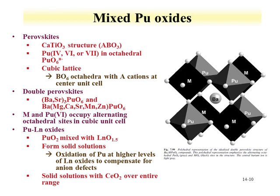Mixed plutonium oxides can also be formed. One important form as a waste form is the perovskite-type structure with ABO3, where plutonium in different oxidation states can be incorporated along with other elements including fission products. Double perovskites have also been evaluated, where plutonium sits in the B location and other metal ions including fission products occupy the A location. Plutonium-lanthanide oxides have also been evaluated, where solid solutions can be formed, though not always over the entire range. For some lanthanides such as cerium dioxide, solid solutions over the entire range are possible. Solid solutions with uranium and thorium systems behave similarly.